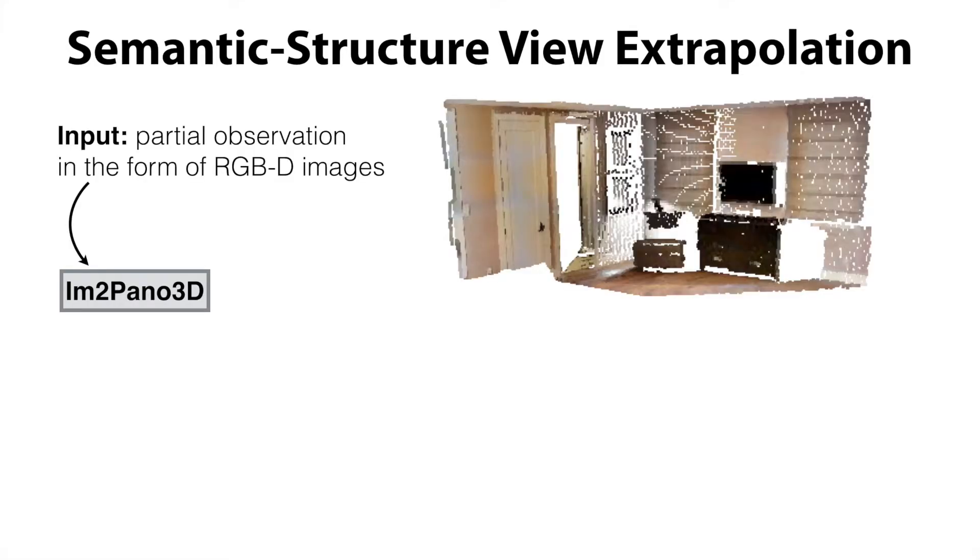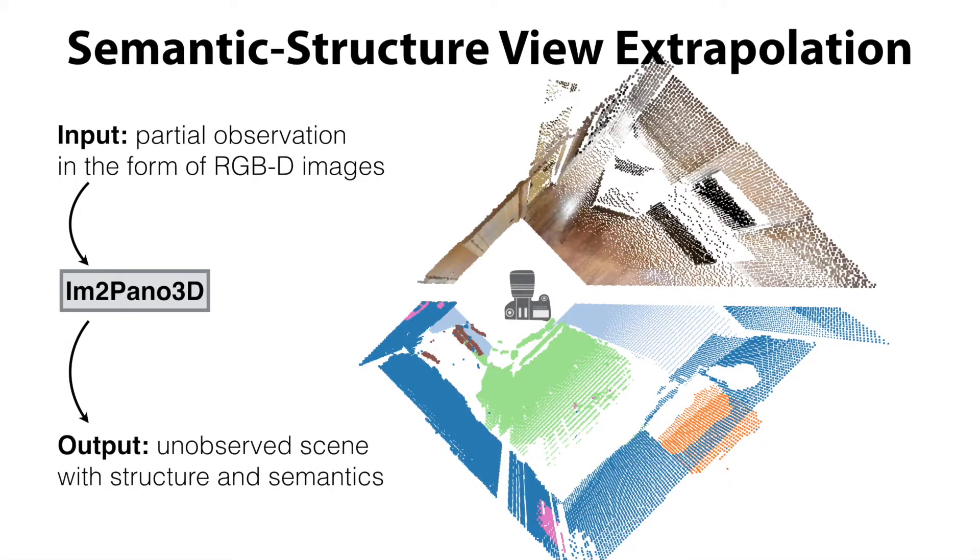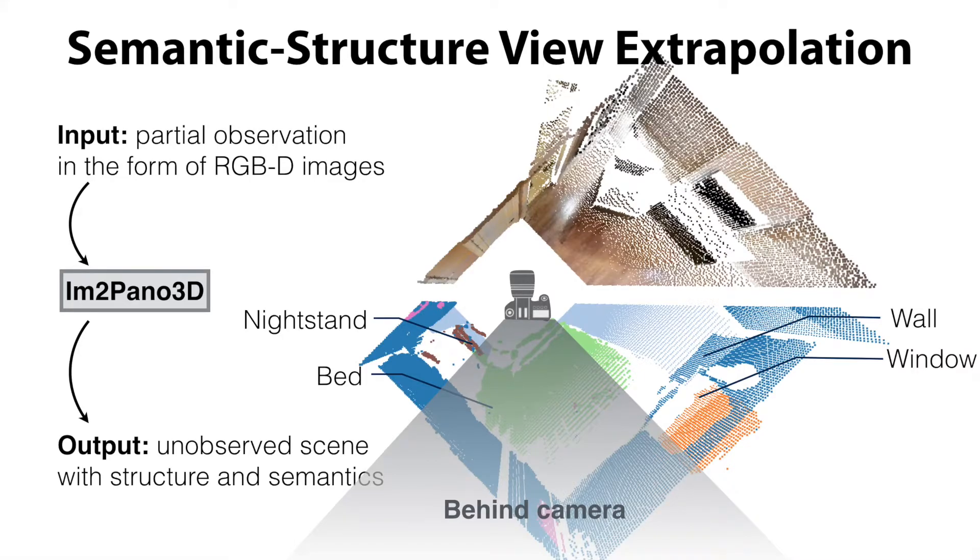Our method, IM2Pano3D, takes a partial view of an indoor scene in the form of an RGBD image and uses a convolutional neural network to generate dense predictions for 3D structure and semantic labels for a full 360-degree panoramic view of that same scene. Note that this includes regions directly behind the camera, which requires the model to predict things that are completely unobserved from the input view.